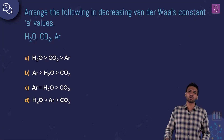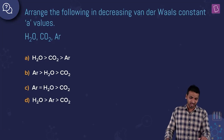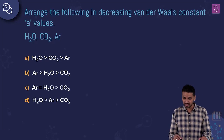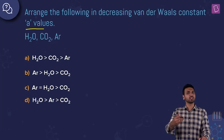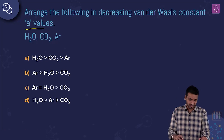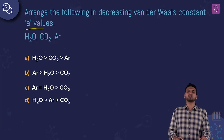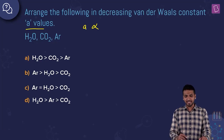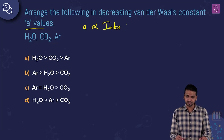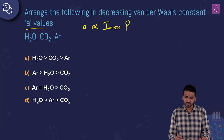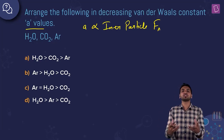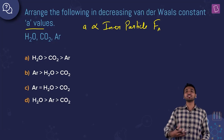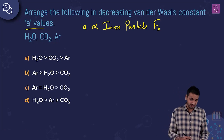Here we have a question on Van der Waals gas constants. Arrange the following in decreasing Van der Waals constant A values. We have two Van der Waals constants: A is for intermolecular force of attraction and B is for the size of the molecule. We have H₂O, CO₂, and argon gas. A depends on the inter-particle force of attraction — if you have more force of attraction, your A value is going to be higher.